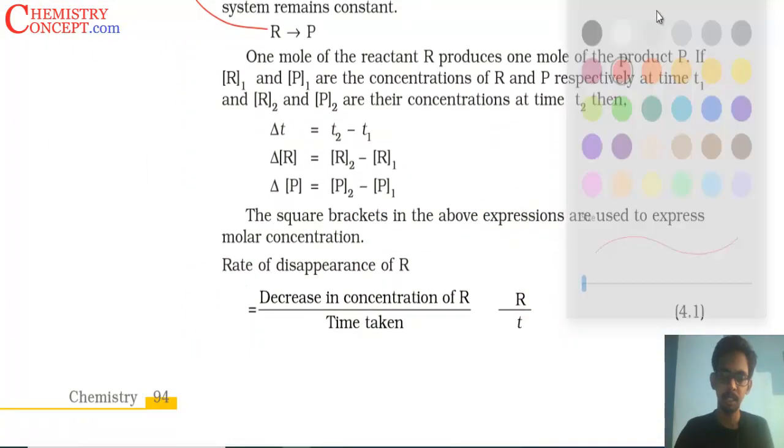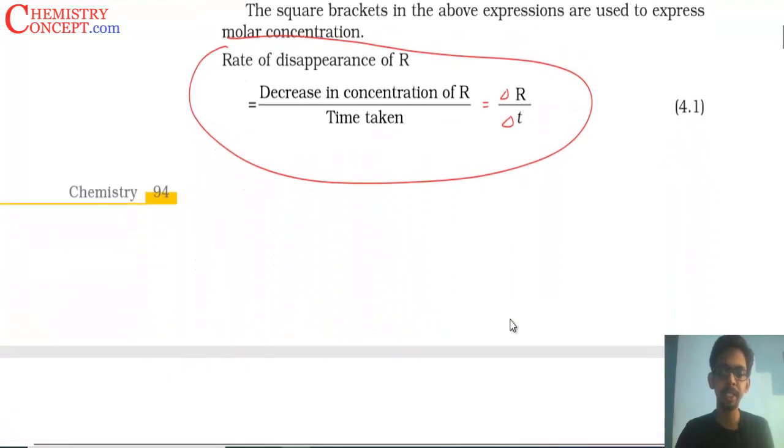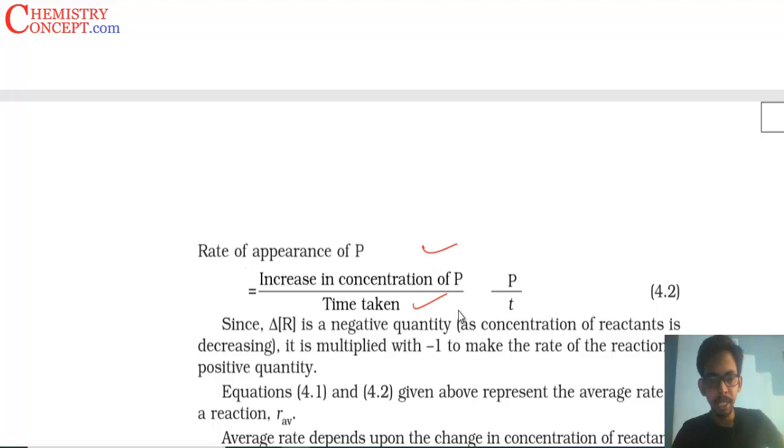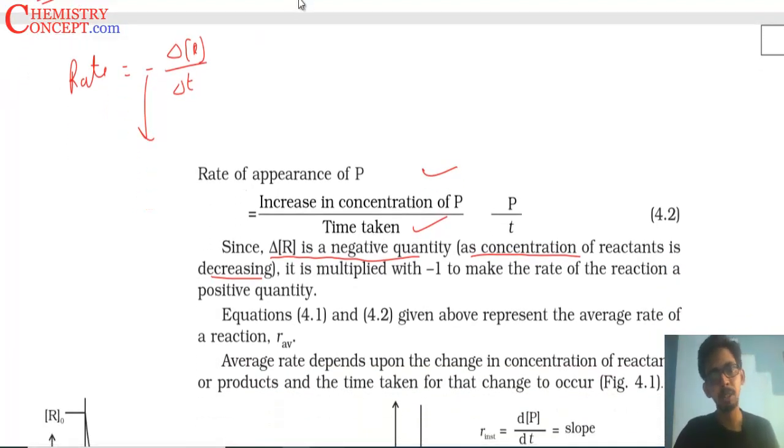Here is the formula. Decrease in concentration of R reactant divided by time taken, and increase in concentration of product upon time taken. Delta R is a negative quantity as the concentration of reactant is decreasing. I also wrote that in the reactant case we put a minus sign because the reactant's concentration is decreasing. In exams they will be asking why the rate of reaction expression in terms of reactant is negative? Because as the reaction proceeds the concentration of reactants decreases. The negative sign represents that the concentration of reactant is decreasing and in case of product it is positive because concentration of product is increasing.